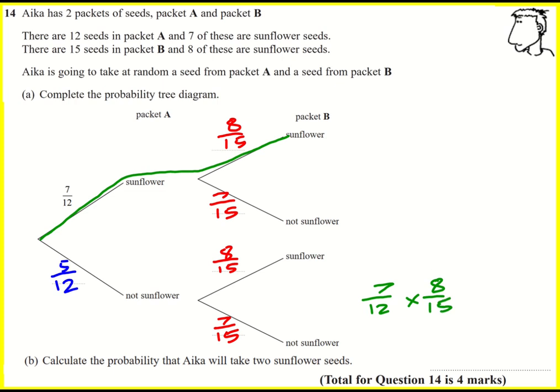You can imagine if it was like 50 percent of people in a town were men and 10 percent of them wear glasses. Well you've got your 50 percent and then you need to find 10 percent of that. That's why we times them together.